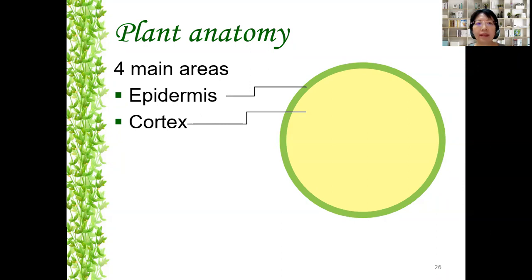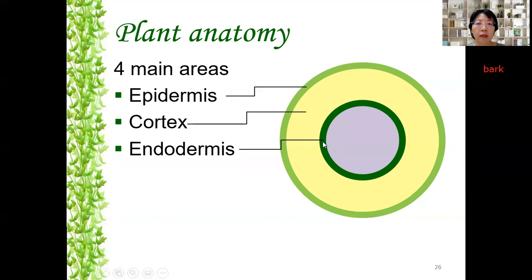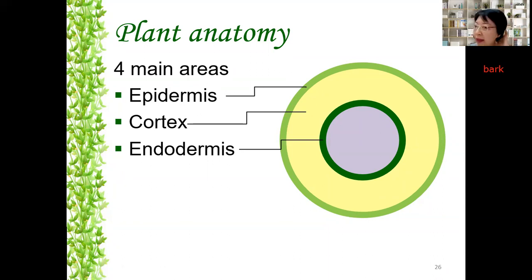Then there is the cortex — the word 'cortex' stands for bark. It's the area below the epidermis of the stem and root. Then followed by the endodermis — 'endo' means inside, 'dermis' means skin. So it's a thin layer inside the plant after the cortex. You can imagine that the epidermis and endodermis sandwich the cortex — like the upper and lower layers of a burger bun with the cortex as the meat in the center.